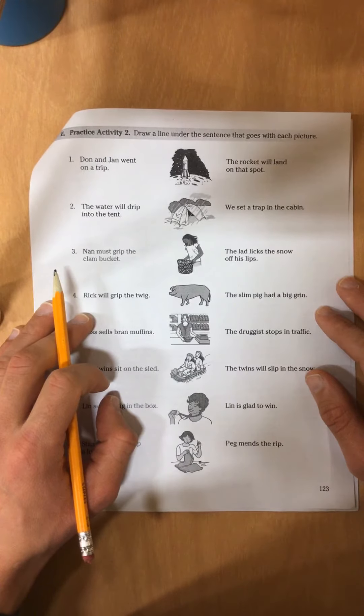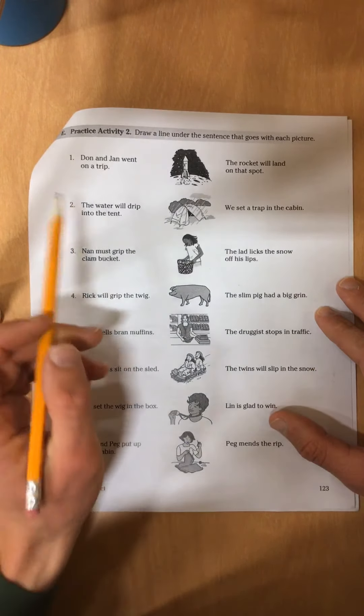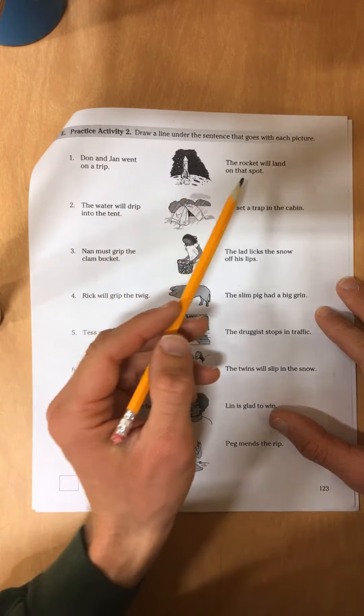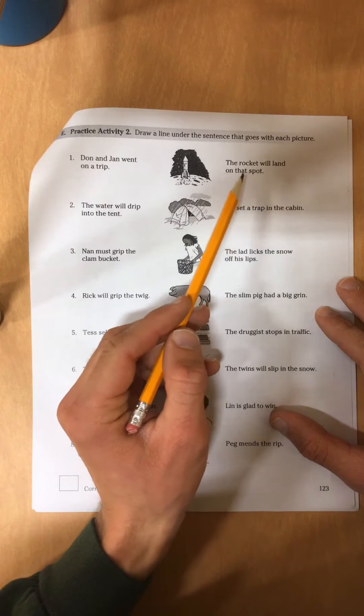Draw a line under the sentence that goes with each picture. Don and Jan went on a trip. The rocket will land on that spot.